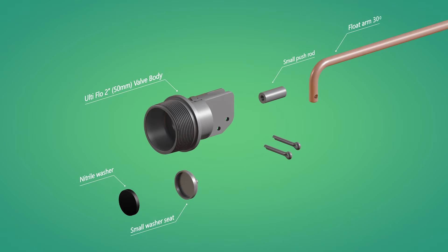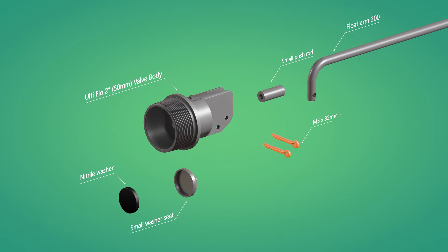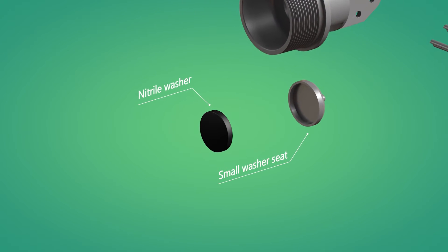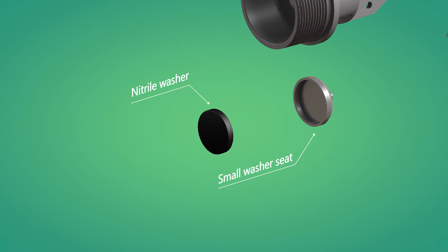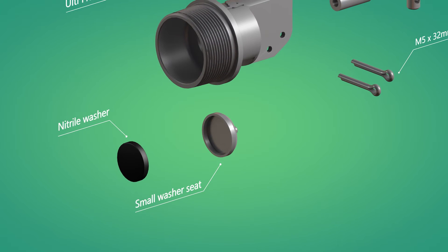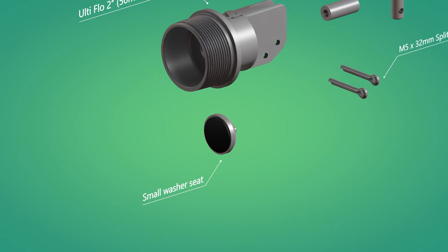A pivoting float arm and two split pins. The replaceable nitrile washer is simply held firmly within the machined recess of the washer seat. The washer seat assembly is the first item installed inside the valve cavity.